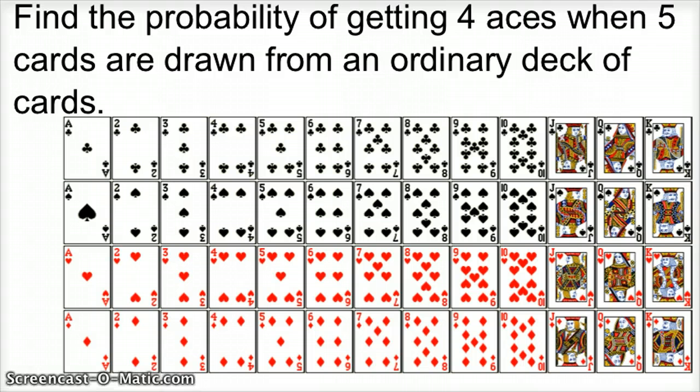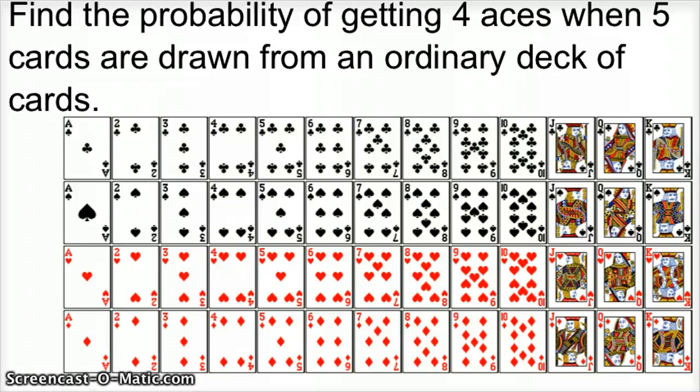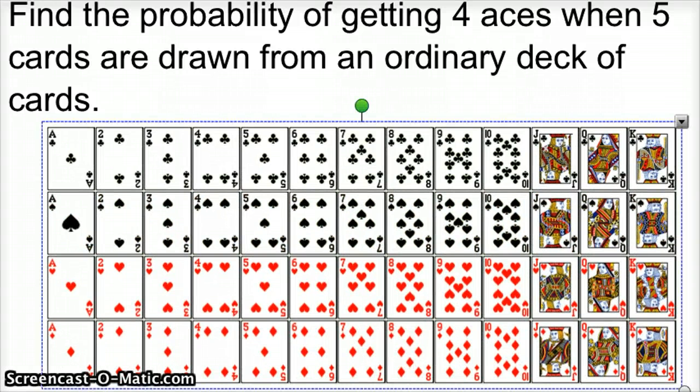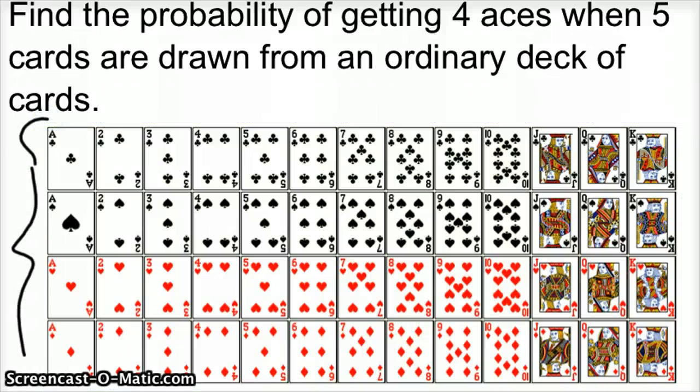Find the probability, and then here are your aces right here on this row. So there's four of them.